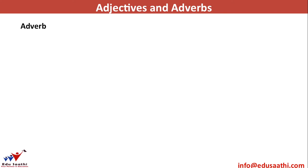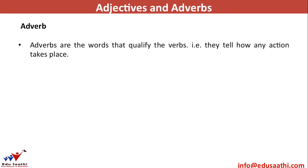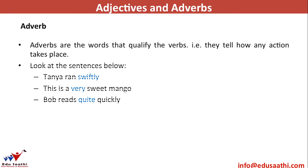As adjectives qualify nouns and pronouns, adverbs are words that qualify a verb, an adjective, or another adverb. Adverbs tell how an action takes place. For example, 'Tanya ran swiftly' — the verb is 'ran,' and 'swiftly' tells you how she ran, so it qualifies the verb and becomes an adverb. In 'This is a very sweet mango,' 'sweet' is an adjective for 'mango,' and 'very' is qualifying 'sweet.'